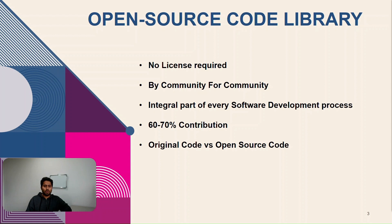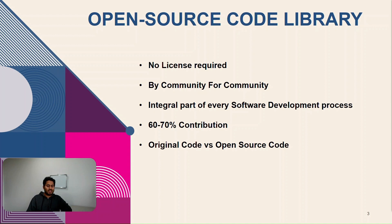Ideally, 60 to 70 percent of contribution in a software's code comes from open source code libraries — this data is from research, and there could be certain variations. If you do a comparison of original code versus open source code, open source definitely has a higher percentage of code in a typical software than its original code.